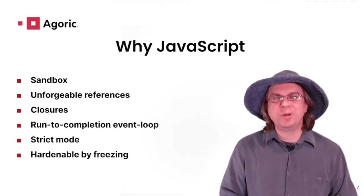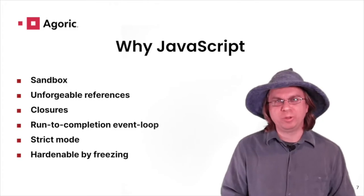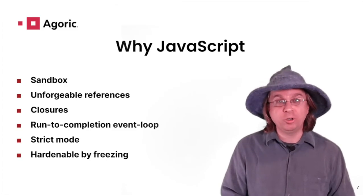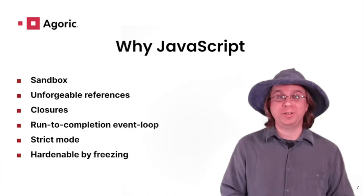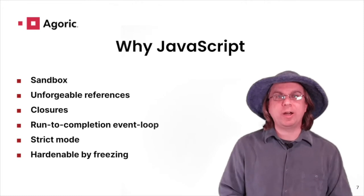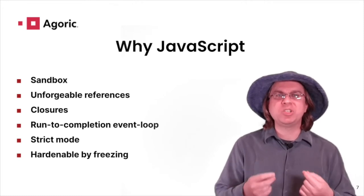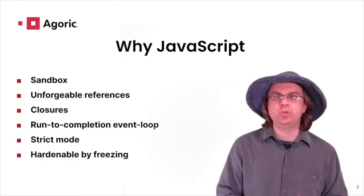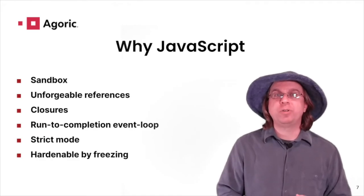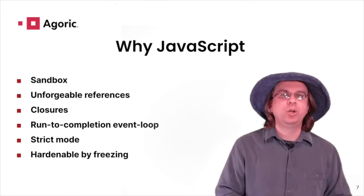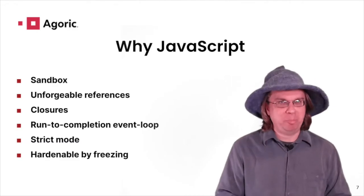A JavaScript program can't wander around in memory looking for pointers to powerful objects, and it can't invoke a kernel function without calling a host function. That means the program can be denied host functions outright and can be delegated specific and revocable pointers to objects we wish it to be able to use. A JavaScript function can hold a powerful object in local scope and use it on behalf of its callers without sharing all of that power.